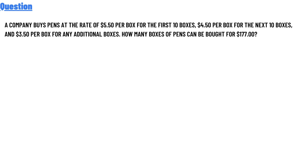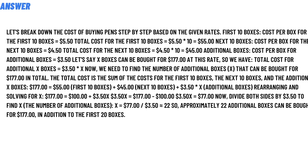Let's break down the cost of buying pens step by step based on the given rates. First 10 boxes: cost per box is $5.50. Total cost of the first 10 boxes: $5.50 multiplied by 10 equals $55.